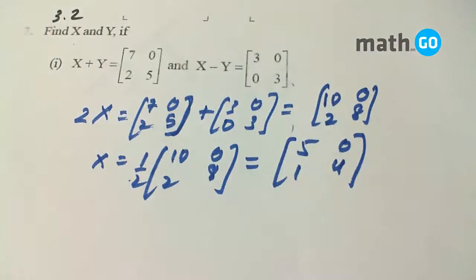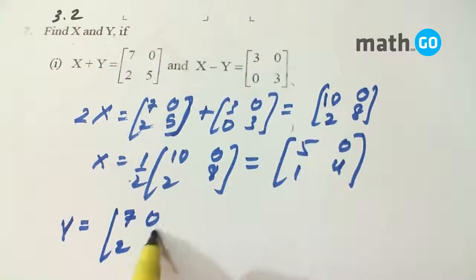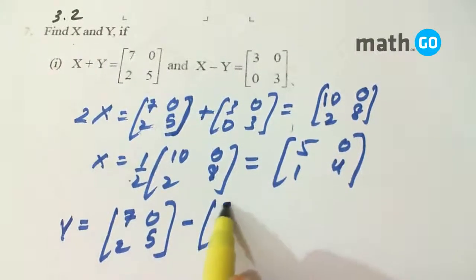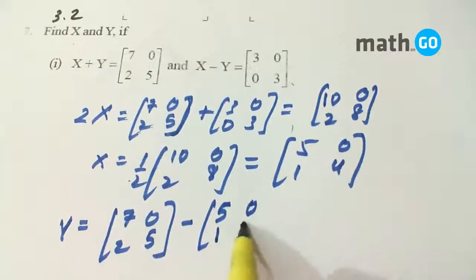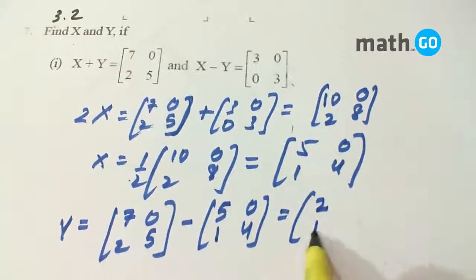And similarly Y can be calculated. We have X plus Y equals to this, so Y equals [7, 2, 0, 5] minus X, or [5, 1, 0, 4]. So Y equals [2, 1, 0, 1].